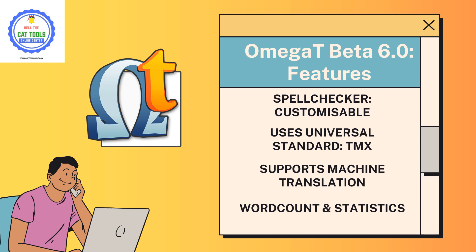For example, if I am using OmegaT and my TM format is TMX, and my friend who is also a translator uses a different CAT tool such as Trados Studio or MemoQ, I can share my TMX file with them. They can import the TMX file into their own CAT tool, whether it's Trados or MemoQ. TMX — the Translation Memory Exchange format — is the universal standard for interchange of TMs, which is a big advantage when using OmegaT.